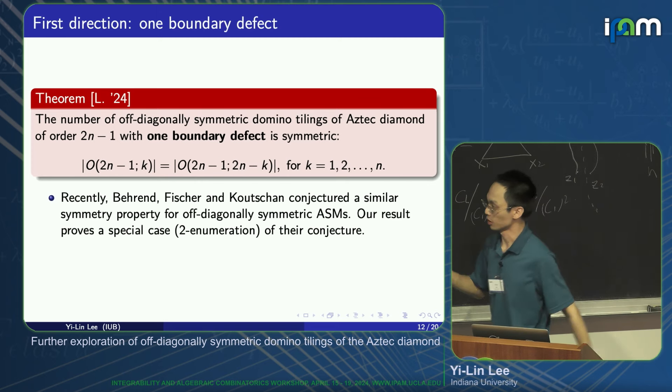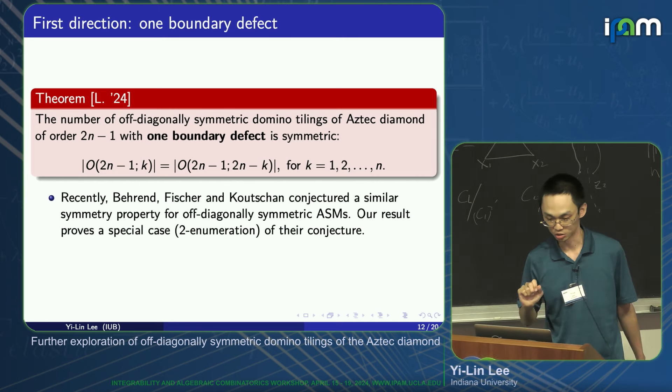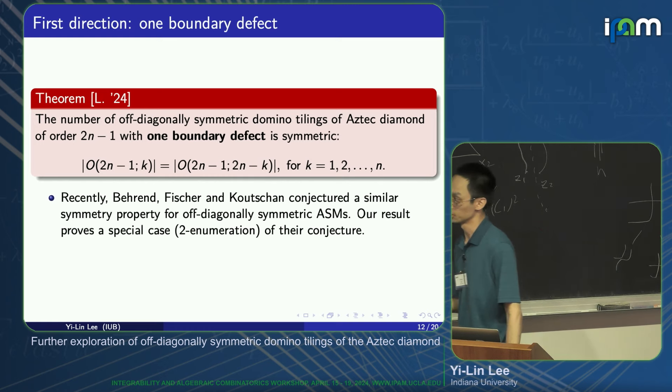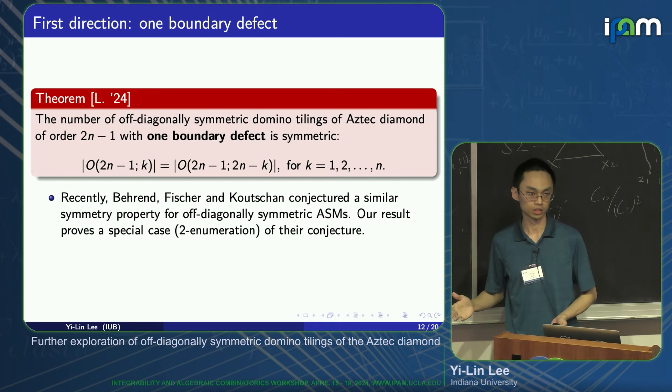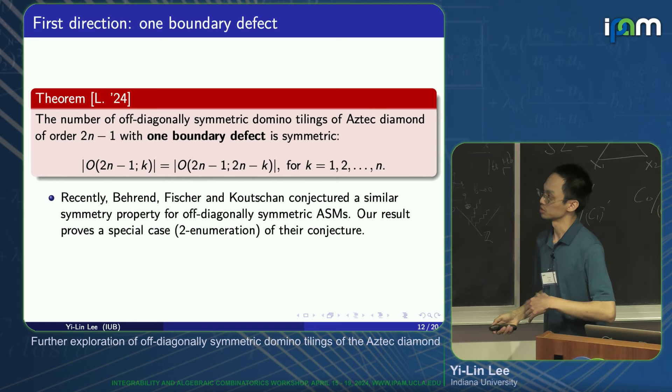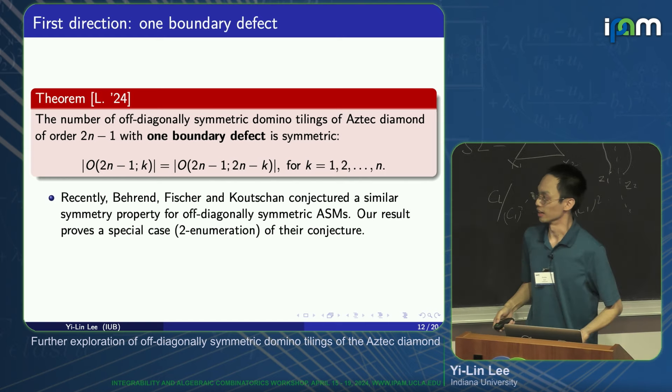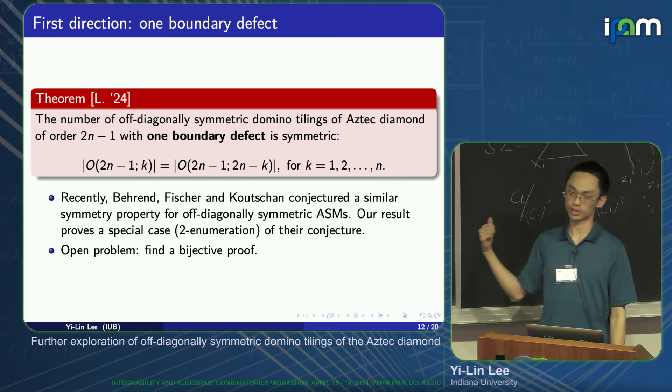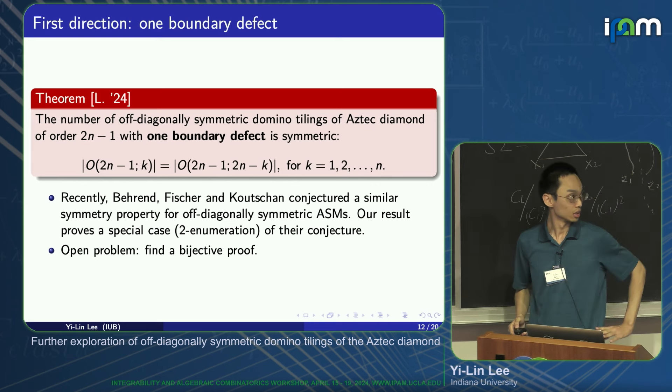The first result is that if we remove the unit squares at the position k and position 2n minus k, they have the same number of off-diagonal symmetric domino tilings. So this is indeed the case. If we remove the second one and fourth one, they have the same number of domino tilings. If we remove the first one and remove the fifth one, they also have the same number of domino tilings. Recently Bryan Fisher and Kuchian conjectured a similar symmetry property for off-diagonal symmetric alternating sign matrices. Basically our result is the special case of their conjecture. Our proof is not straightforward. It's a bit technical. An open problem is to find a direct bijection between the tilings of these two sets.